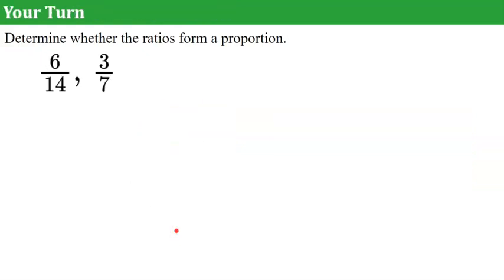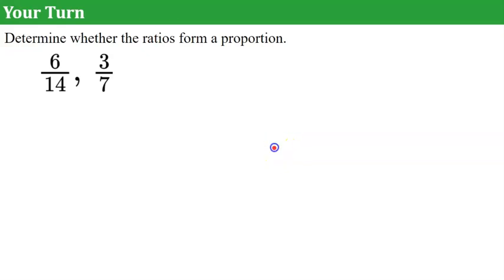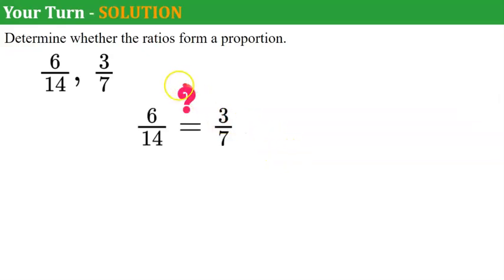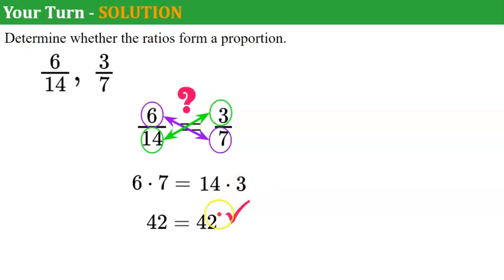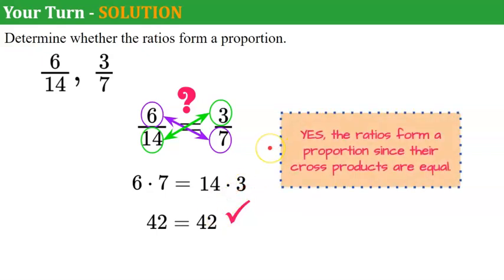Now it's your turn. I would like you to determine whether the ratios form a proportion. Please pause the video now, and come back and hit play when you're done. Welcome back. So we're asking ourselves: is 6 over 14 equal to 3 over 7? I'm going to use the cross-product property. 6 times 7 has got to equal 14 times 3. 6 times 7 is 42, and 14 times 3 is also 42. It checks. So yes, the ratios form a proportion, since their cross-products are equal.